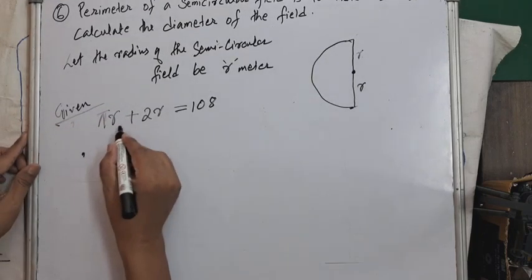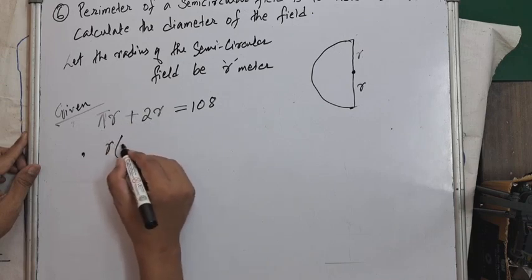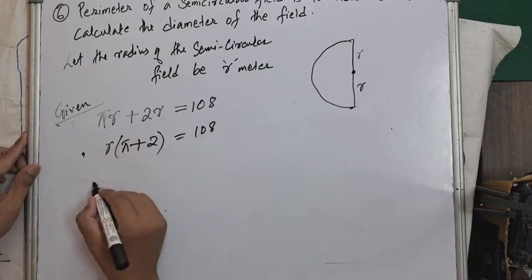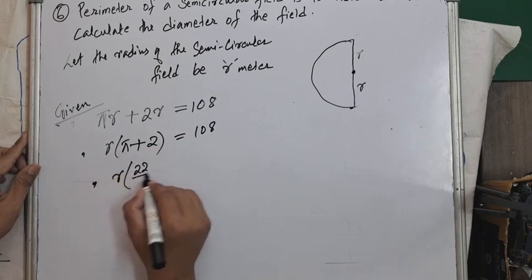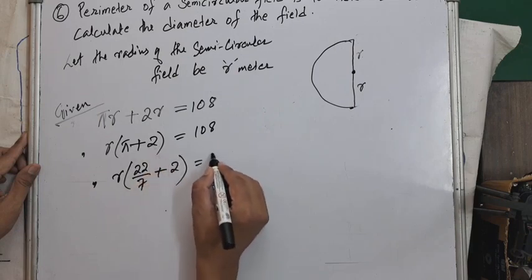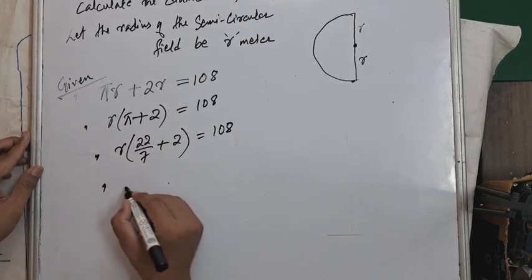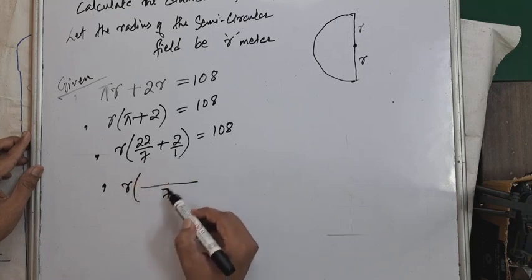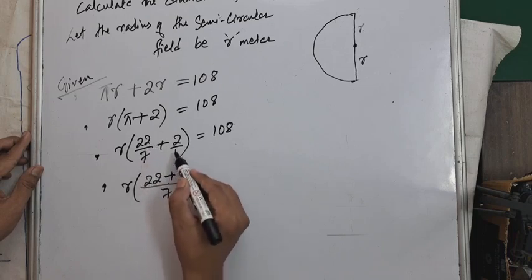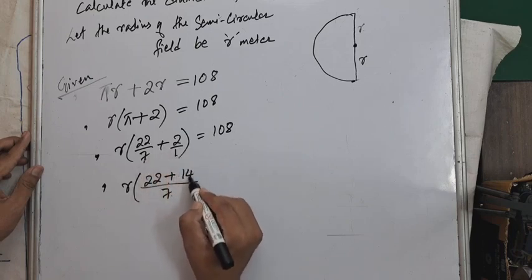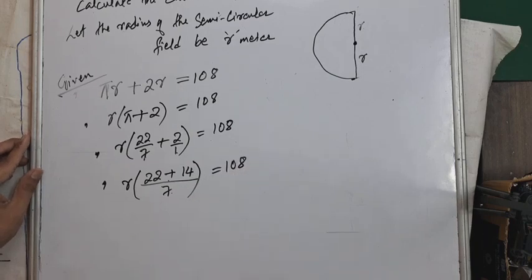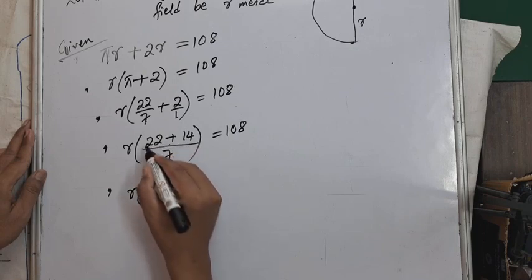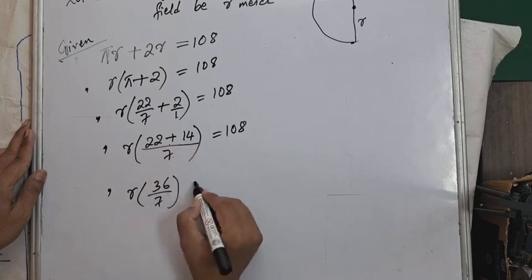Taking r as common: r(π + 2) = 108. Substituting π = 22/7: r(22/7 + 2) = 108. Taking LCM of 7 and 1, which is 7: r × (22 + 14)/7 = 108, giving r × 36/7 = 108.